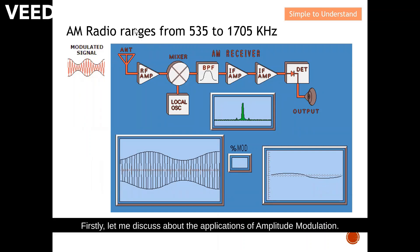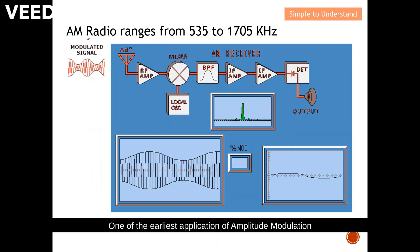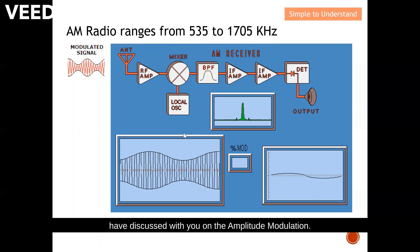Firstly, let me discuss the application of amplitude modulation. One of the earliest applications is the AM radio, which ranges from 535 to 1705 kilohertz. How it operates is exactly what I have discussed with you previously on amplitude modulation.